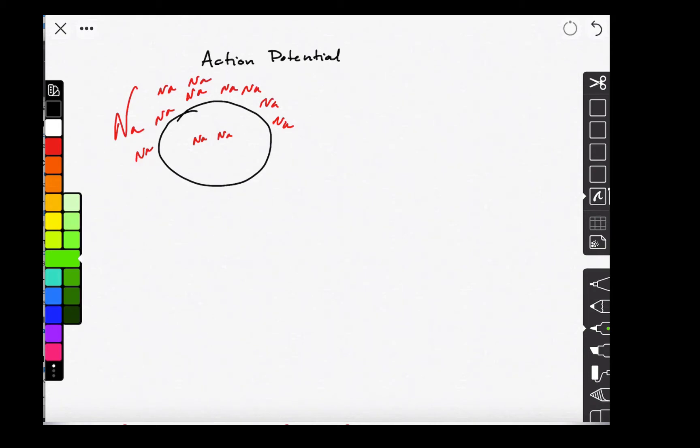And so what happens is that normally, the cell would appear to be negative relative to the outside. The inside of the cell would seem negative relative to the outside because it has fewer positive charges.